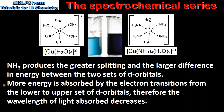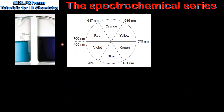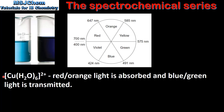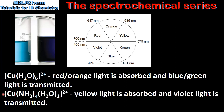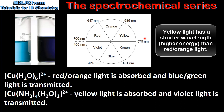More energy is absorbed by the electron transitions from the lower to the upper set of d orbitals, therefore the wavelength of light absorbed decreases. Using a color wheel to explain the difference in color: for the hexa aqua copper 2 ion, red orange light is absorbed and blue green light is transmitted. For the tetra amino diaqua copper 2 ion, yellow light is absorbed and violet light is transmitted. So by replacing a weaker field ligand with a stronger field ligand, the wavelength of light absorbed decreases, due to the larger energy difference between the two sets of d orbitals.